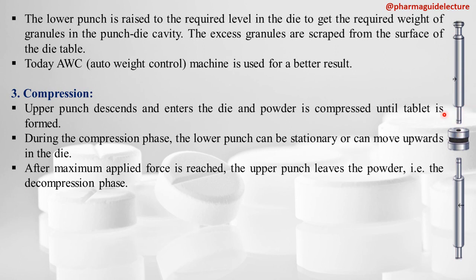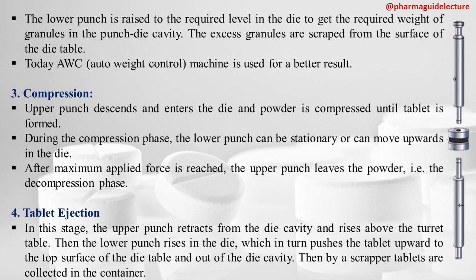The decompression phase will be discussed further. The fourth step is tablet ejection. The upper punch retracts from the die cavity and rises above the turret table. Then the lower punch rises in the die, pushing the tablet upward to the top surface of the die table. A scraper then collects the tablets into containers.